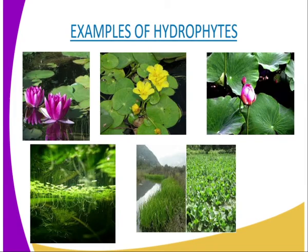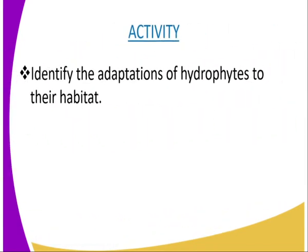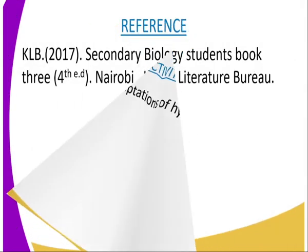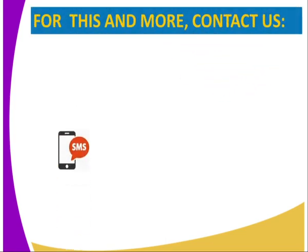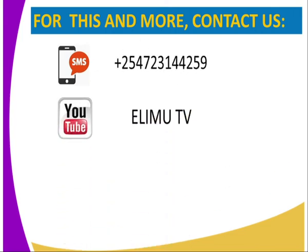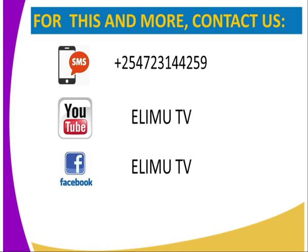Having done that, we are going to have the following activity: you should identify the adaptations of the hydrophytes to their habitat. For more on this lesson, you can refer to KLB Secondary Biology Experiment Book 3, fourth edition, Nairobi — Kenya Literature Bureau. To get this lesson and many more biology lessons, you can send us an SMS through the number on our screen, subscribe to our YouTube channel Elimu TV, our Facebook page Elimu TV, or tweet us at Elimutv underscore Kenya. Let us subscribe to all these channels so that we may enjoy these and many more biology lessons. Thank you.